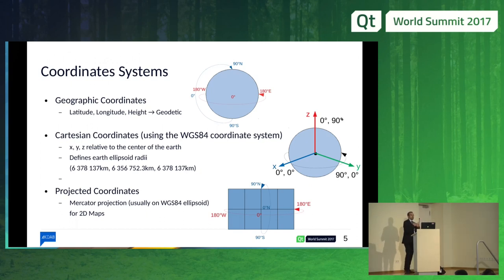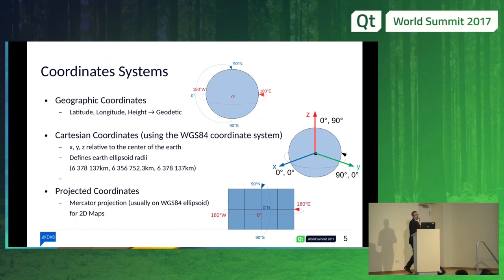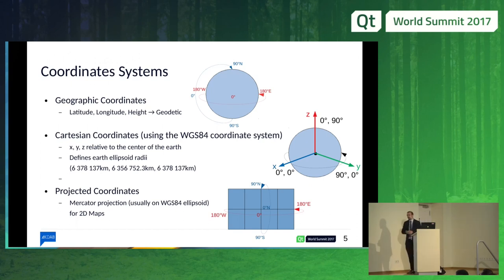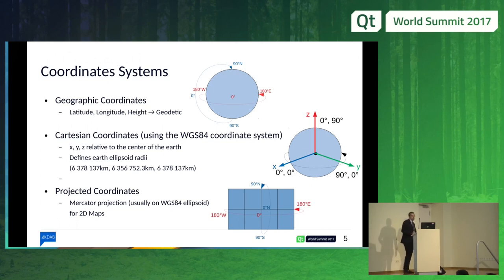There's one third coordinate system we need to be aware of, which is projected coordinates. All the layers — if you think about Google Maps, Bing Maps, OpenStreetMap — are providing tiles which are in projected coordinates, something that is 2D, and we will have to deal with that if we want to deal with images on our Earth.